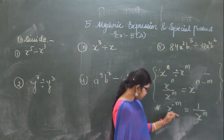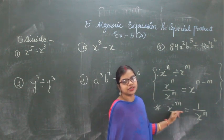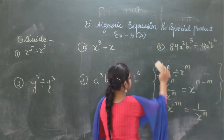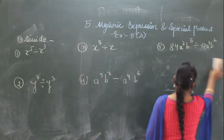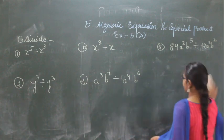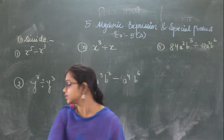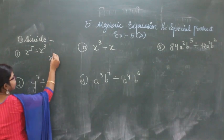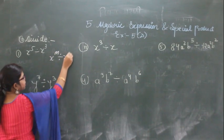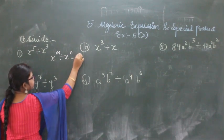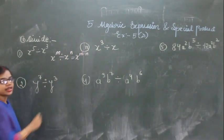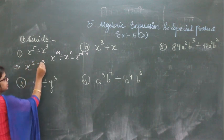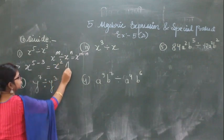If there are like bases x with any power, you can write x to the negative power as 1 upon x to the power m. Now let's start with the first question. It is given as x to the power 5 divided by x to the power 3, which is in the form x to the power m divided by x to the power m, so this becomes x to the power 5 minus 3, which is x to the power 2.